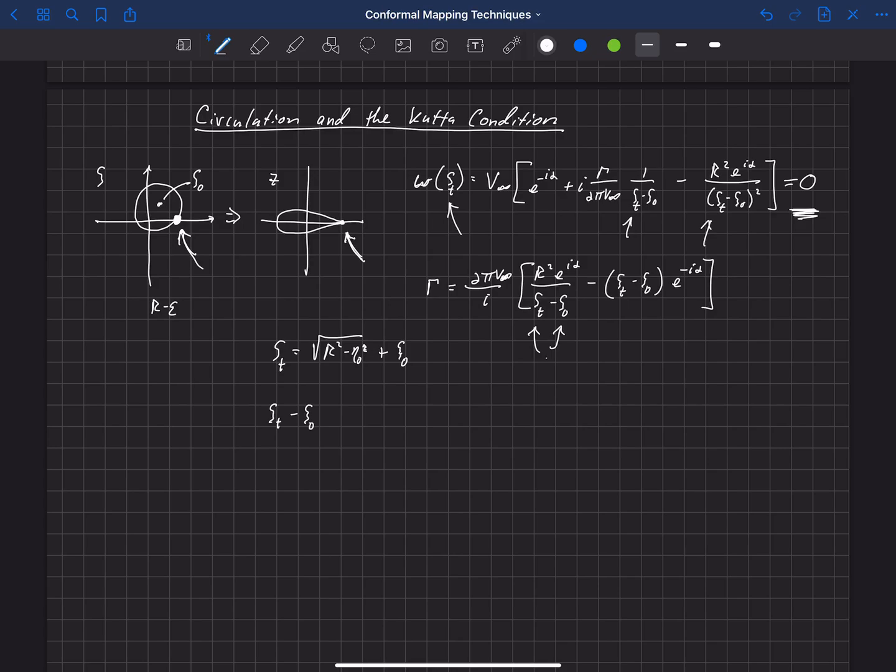If we subtract those two, then what we're going to get is the square root of r squared minus eta naught squared, and then we'll have this xi naught will cancel with the xi naught inside of this zeta naught and we'll be left with minus i eta naught. So now this expression for zeta t minus zeta naught we'll plug in in these two locations here, and we can rearrange this equation.